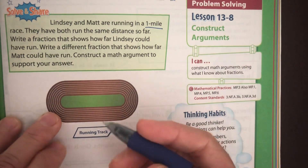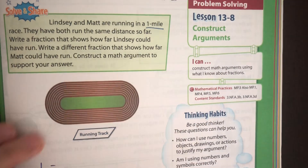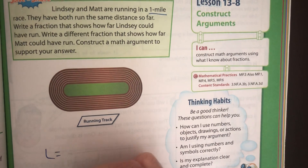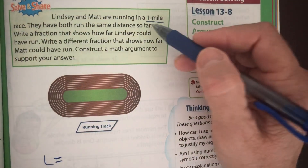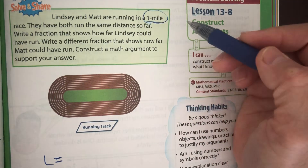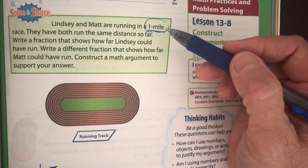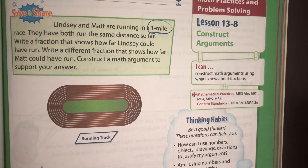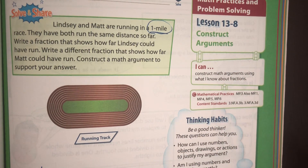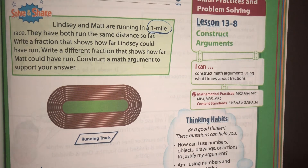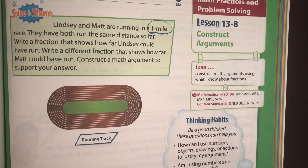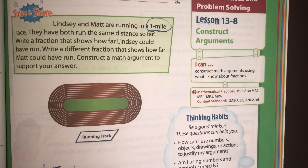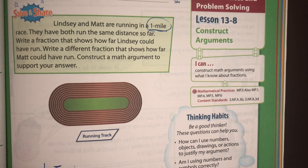Write a fraction that shows how far Lindsay could have run, and write a fraction that shows how far Matt could have run. These have to be equivalent fractions because their whole is the same — one mile. It would be different if one was running a one-mile race and the other a two-mile race, because half of a one-mile race is very different than half of a ten-mile race. But they're both running a one-mile race and have run the same distance, so we basically want two fractions that could equal each other.